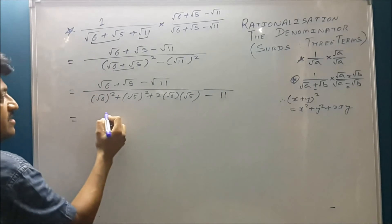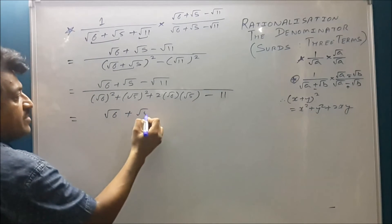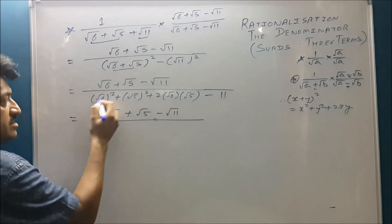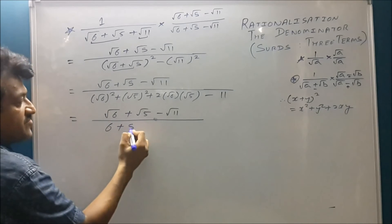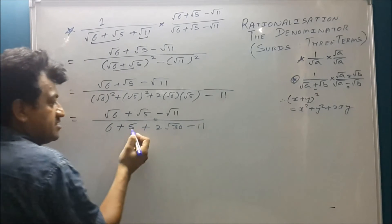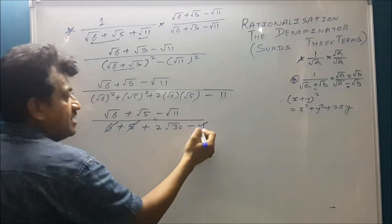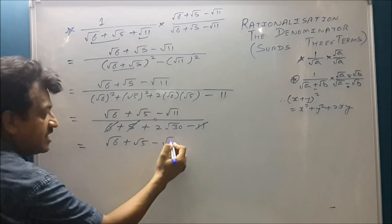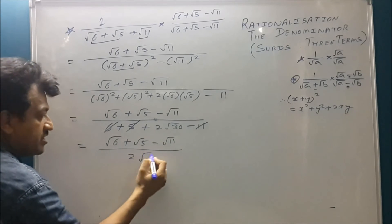So you check root 6 plus root 5 minus root 11 upon root 6 square, 6 plus 5 plus 2 root 30 minus 11. You can cut 6 plus 5 is 11. You get root 6 plus root 5 minus root 11 upon 2 root 30.